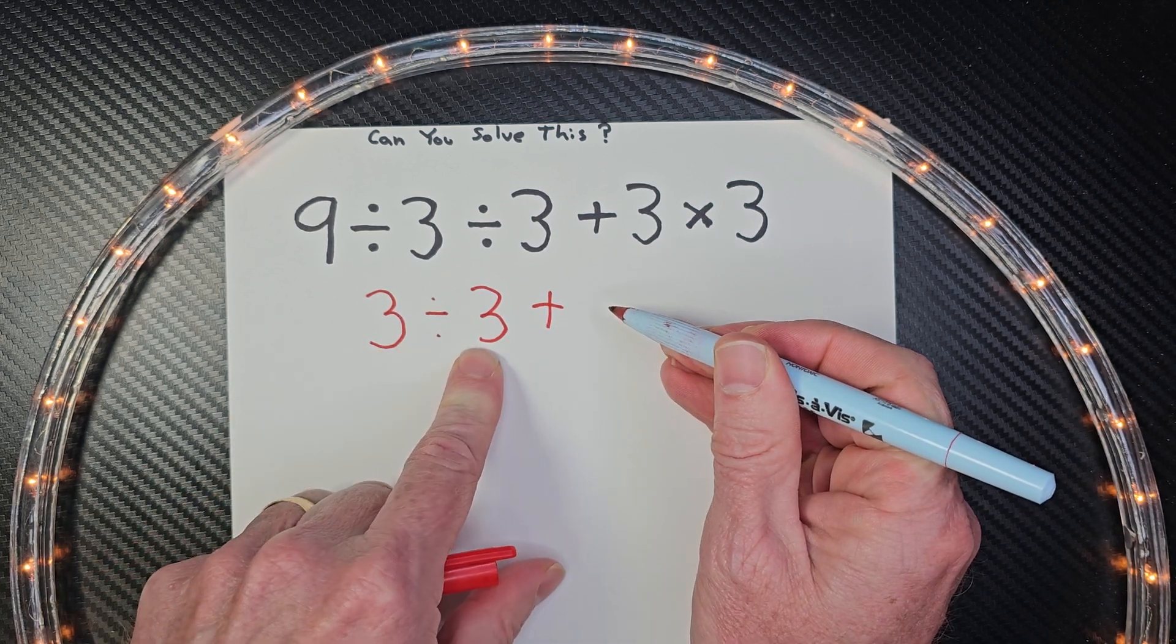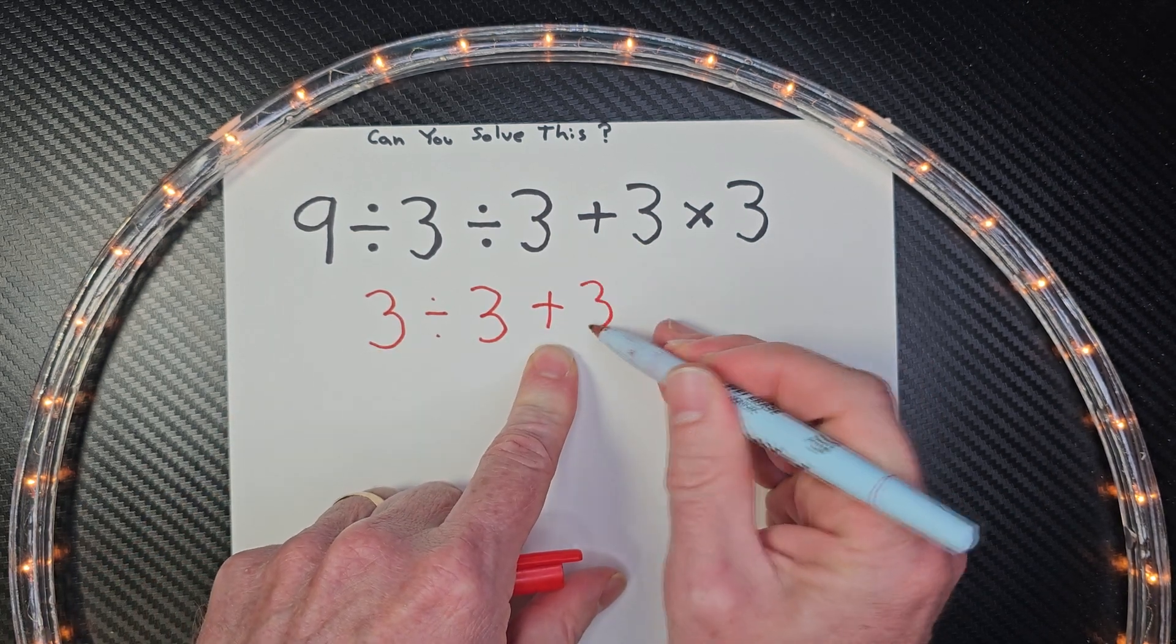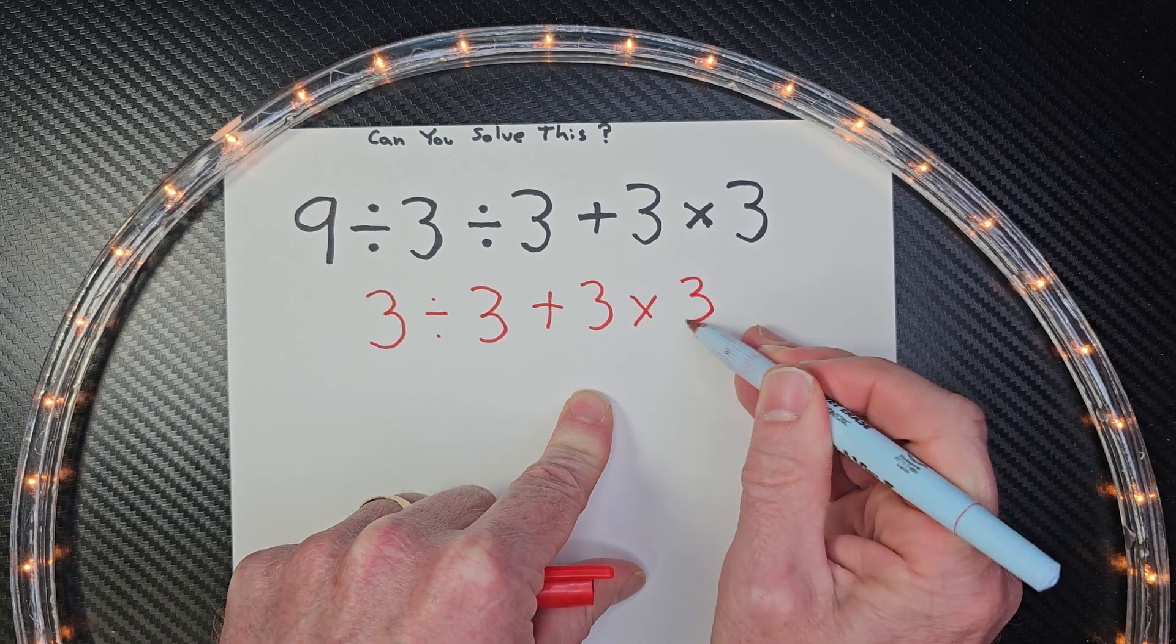So 3 divided by 3 plus 3 times 3. All right.